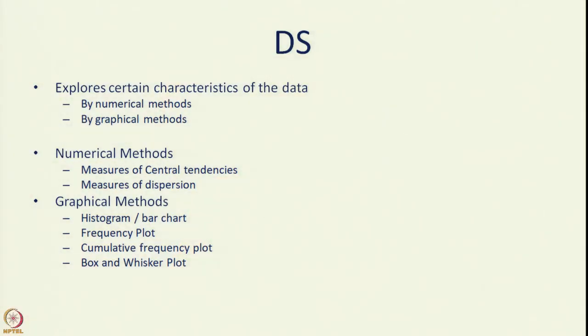What does descriptive analysis do? It explores certain characteristics of the data, either by numerical methods or by graphical methods. Among the numerical methods, two play a very important role: they are called measures of central tendency and measures of dispersion.